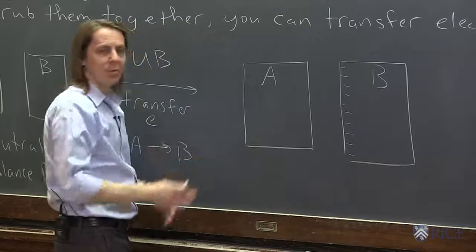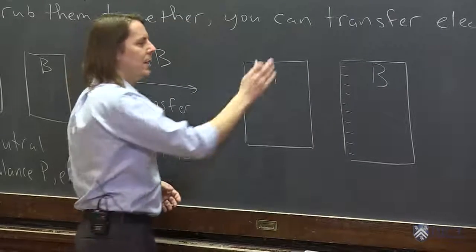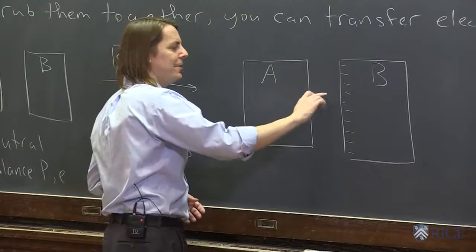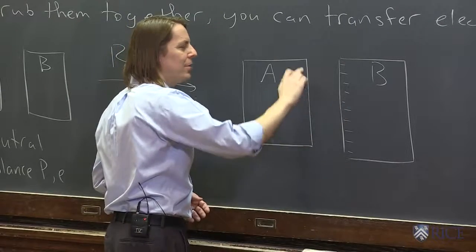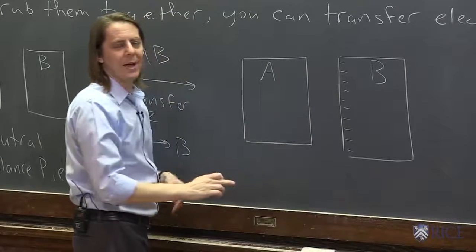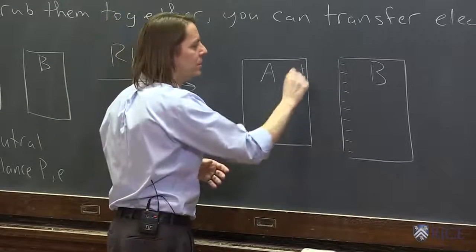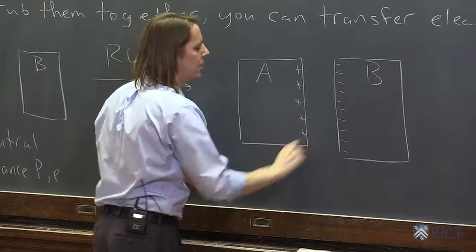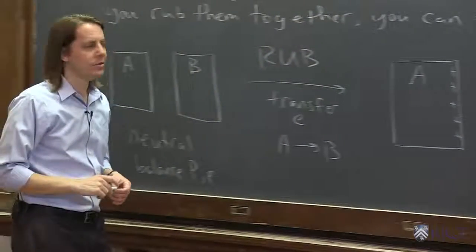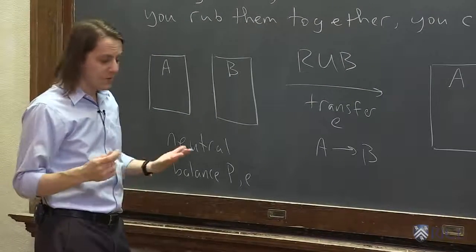Now if electrons came off of this material and went over to this material, now there's some electrons missing here. There's some atoms that have more protons than electrons right at the surface, so it leaves this surface a little bit positively charged.